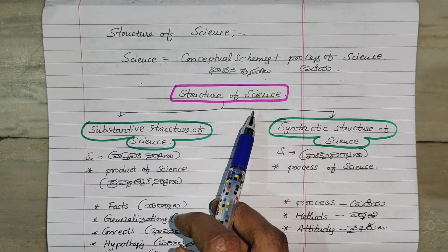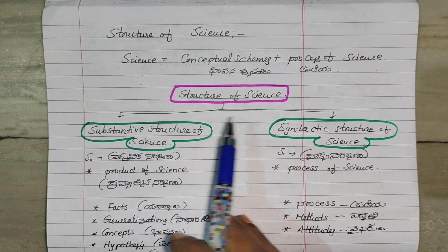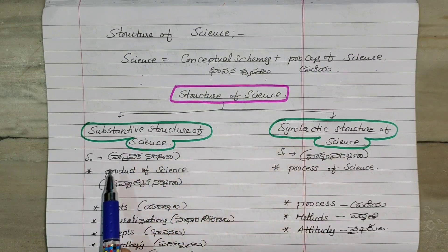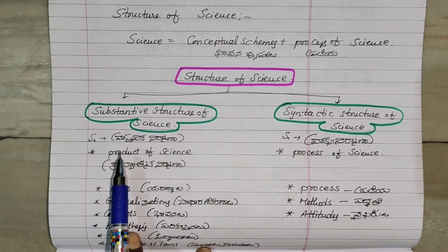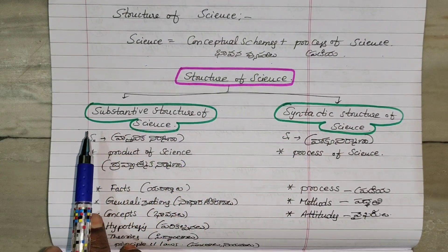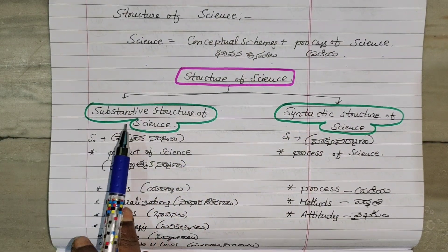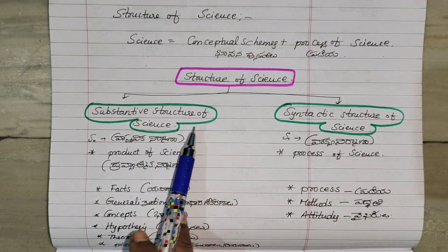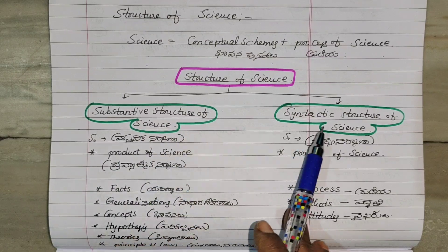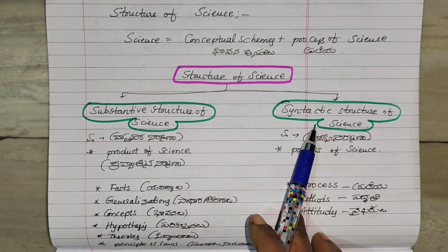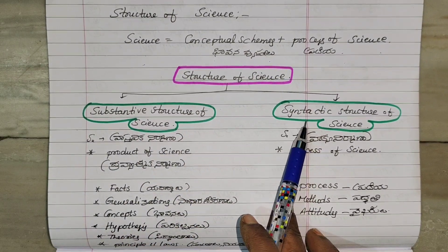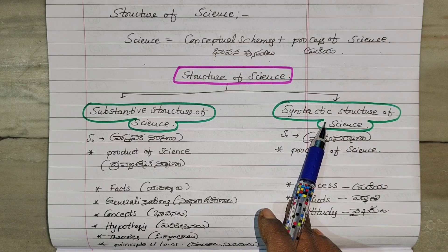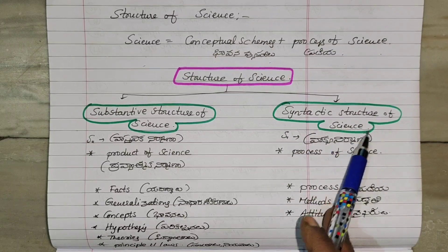The Structure of Science is classified into two types: one is the Substantive Structure of Science, and the second one is the Syntactic Structure of Science.